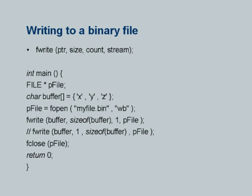I have put a comment to say fwrite(buffer, 1, sizeof(buffer), pphile) will also work correctly because sizeof(buffer) times 1 is still the same as 1 times sizeof(buffer). However, the correct sequence is the one I have mentioned. The commented fwrite command is found in the example on the online resource — I do not really agree with the semantics, although it will work correctly.